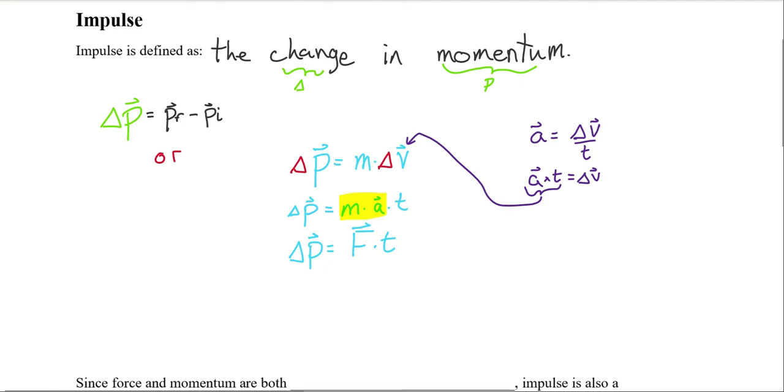The change in momentum is the final momentum minus the initial momentum or the change in momentum can also be measured by the amount of net force being applied multiplied by the amount of time the force is being applied. There are two ways for us to go ahead and find our impulse.